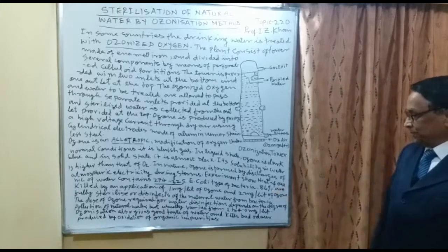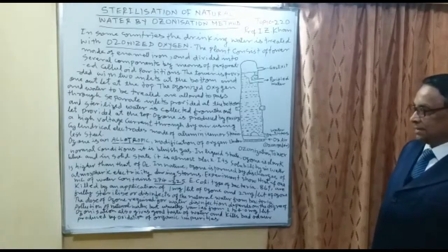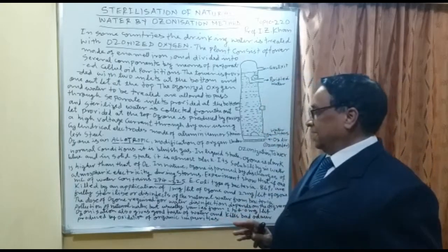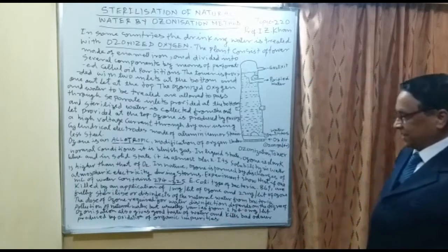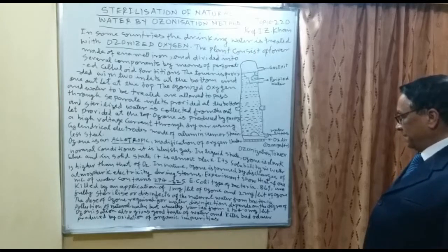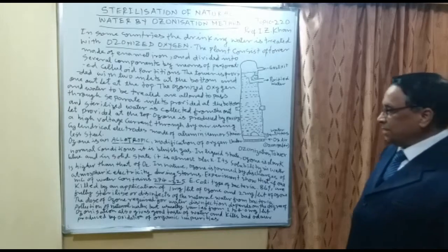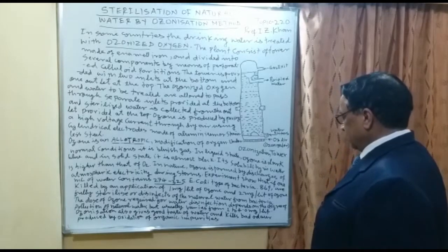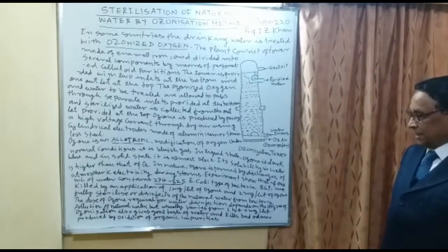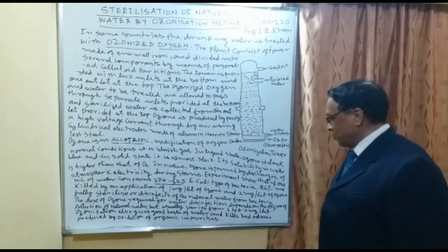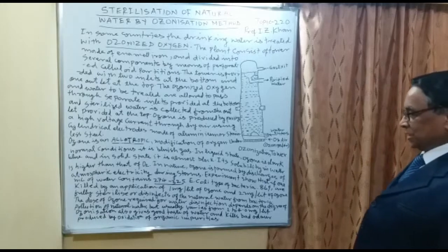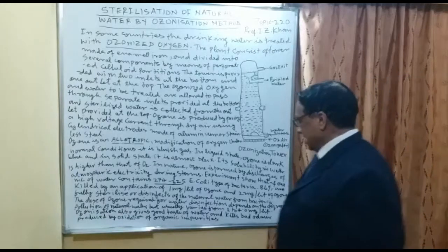86 percent of E. coli are killed by one milligram of ozone per liter. If we add two milligrams of ozone per one liter, the water will be fully sterilized and all bacteria will be killed. The dose of ozone required for water disinfection depends on the degree of pollution of natural water, but usually it varies from one to four milligrams per liter.